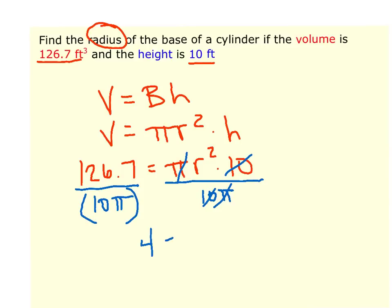What you should end up happening, or what should end up happening, is you have r² on the right side, and if you do 126.7 divided by 10π, it's like 3.99. So we're going to go ahead and just round that to 4. And so the last step for solving for r is to do the square root, and we get a radius of 2. And because this is in feet, we would say 2 feet.